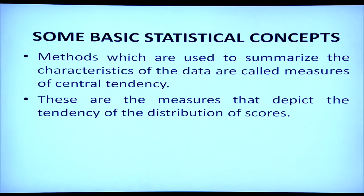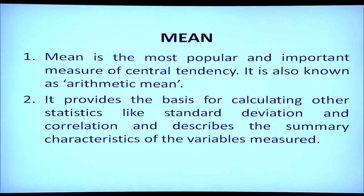Methods which are used to summarize the characteristics of data are called measures of central tendency. These are measures that depict the tendency of the distribution of scores — how scores are distributed in a particular phenomenon. The first is known as mean. Mean is the most popular and important measure of central tendency. It is also known as the arithmetic mean and provides the basis for calculating other statistics like standard deviation and coefficient of correlation, and also describes the summary characteristics of the variables measured.